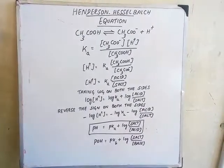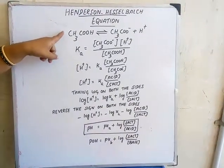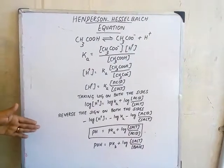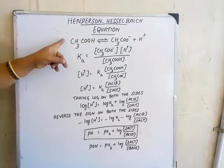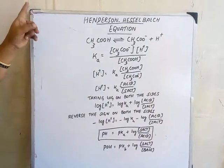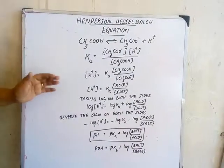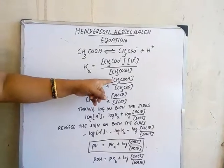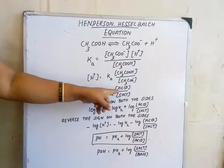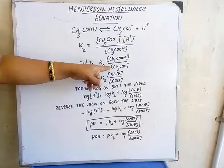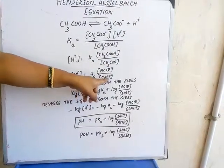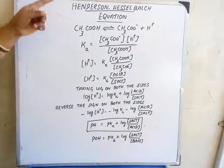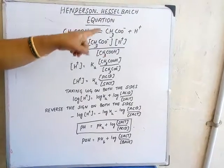Here, as it is a weak acid, its dissociation is already less. Further, we are adding sodium acetate also. So due to common ion effect, dissociation is further suppressed. That is why we are taking acetic acid as the original concentration of acid and the acetate ion as the original concentration of salt. Because dissociation is less here, product formation is also less — that is why we take them as original concentration.